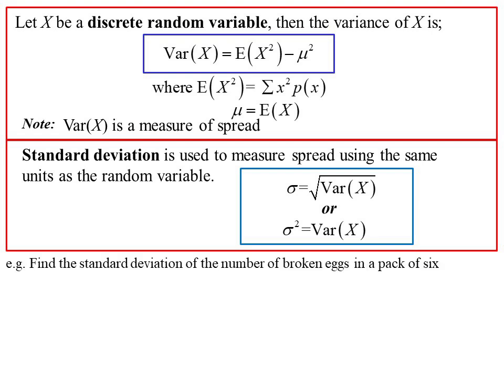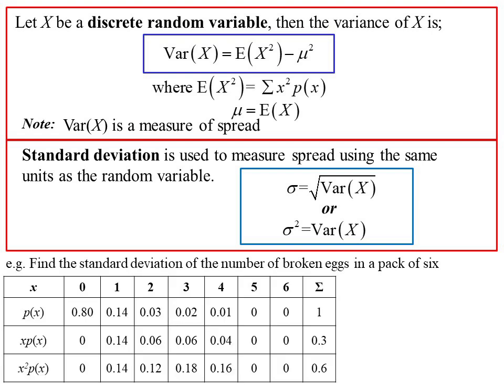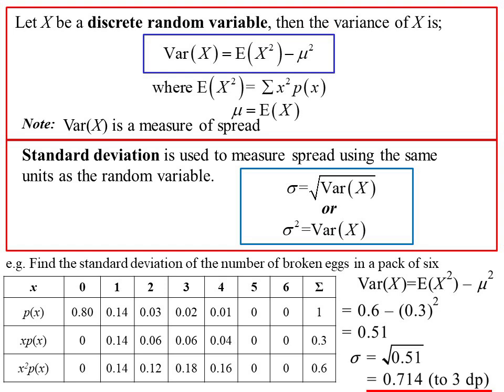Let's go back to our eggs. What is the standard deviation? Add the x²·p(x) row. The expected value of X² is 0.6, and the average was 0.3, so square that. 0.51 is the variance, therefore the standard deviation to three decimal places is 0.714.